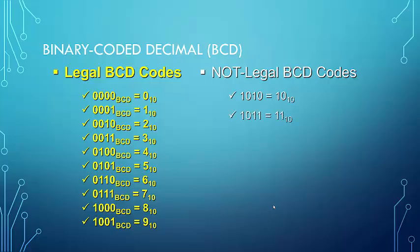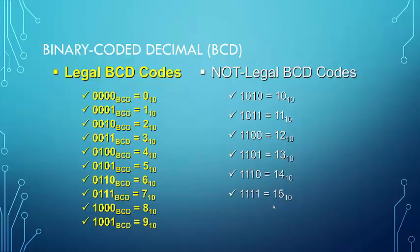The illegal codes continue with 11, or B; 12, or C; 13, or D in hexadecimal; 14, or E; and 15, which would be F in hexadecimal.